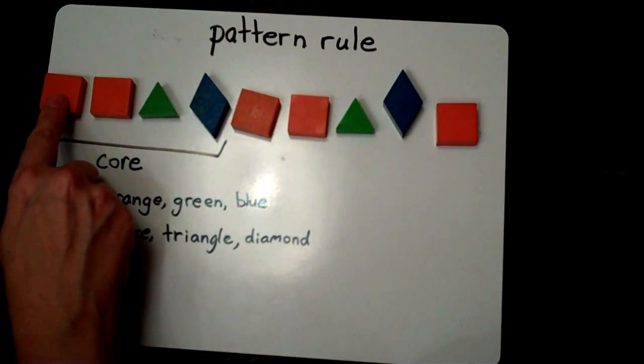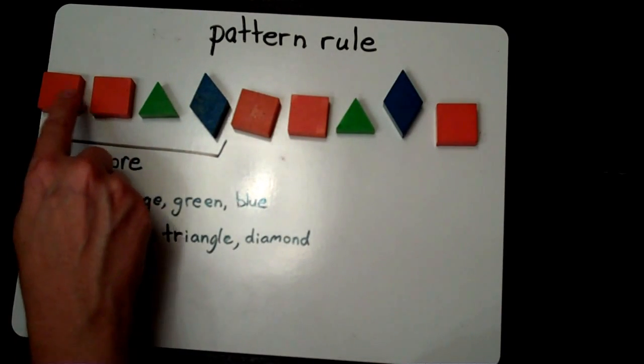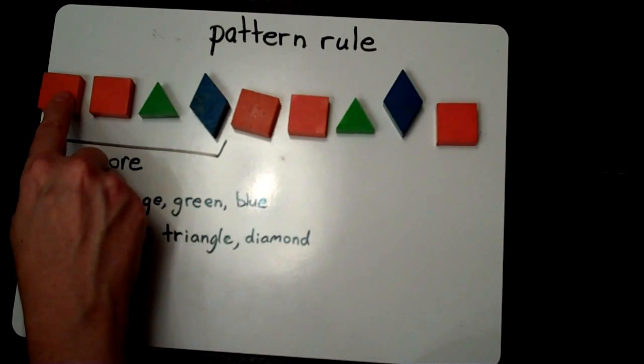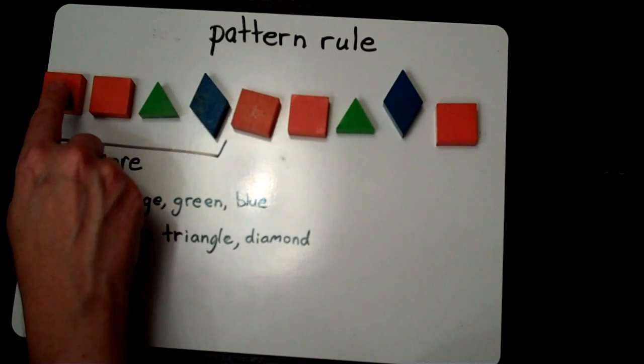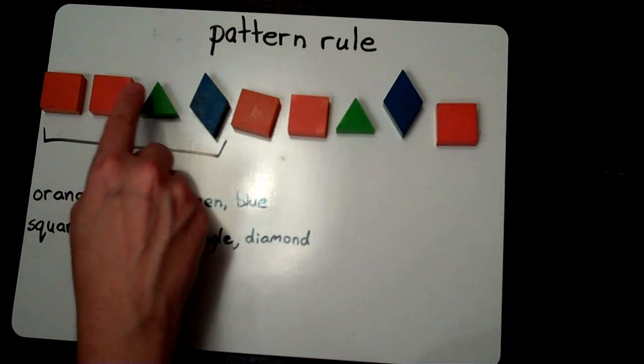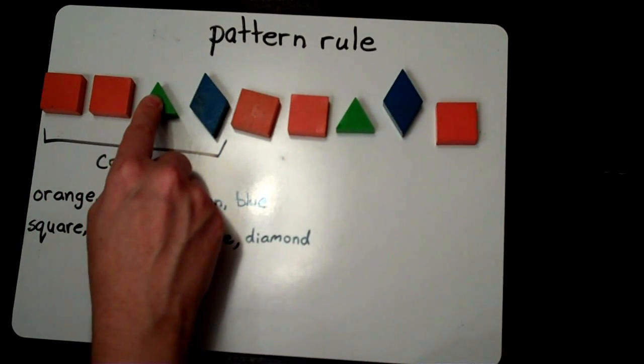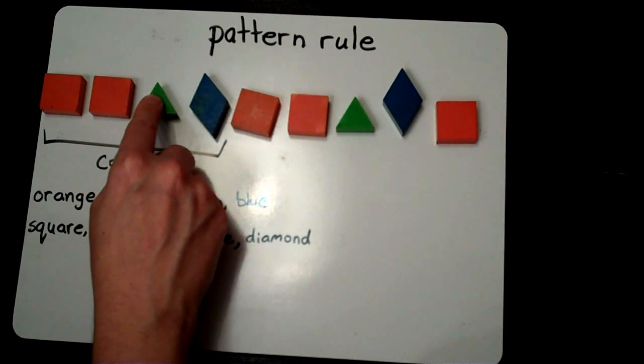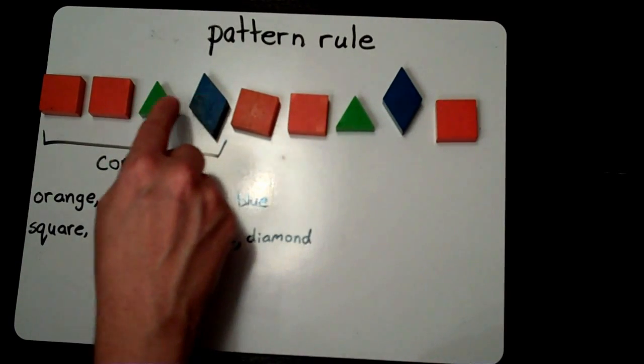This would be A because this is the exact same as this element, it's going to be A. This one's different so I have to go to the next letter of the alphabet, B. This is different than all of these elements so I go to the next letter of the alphabet, C.